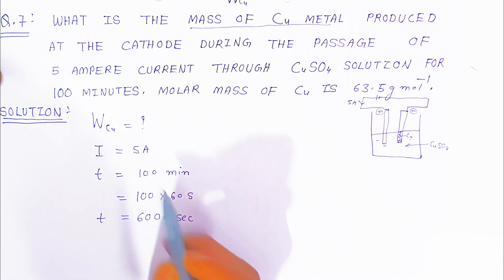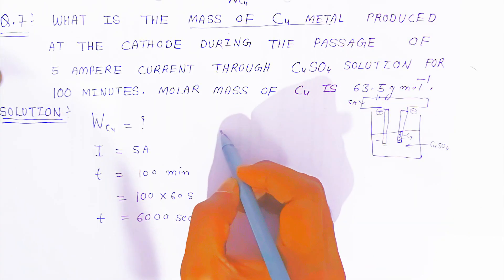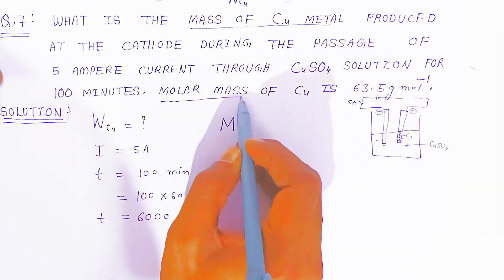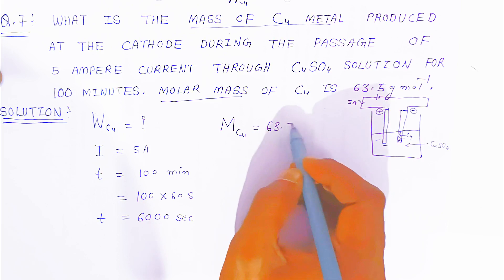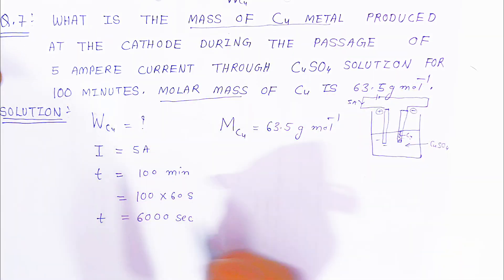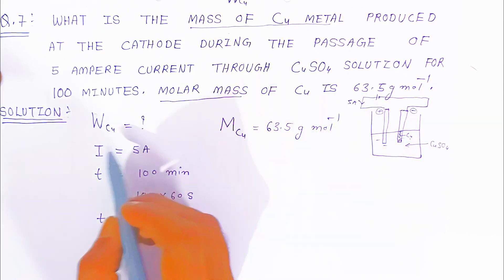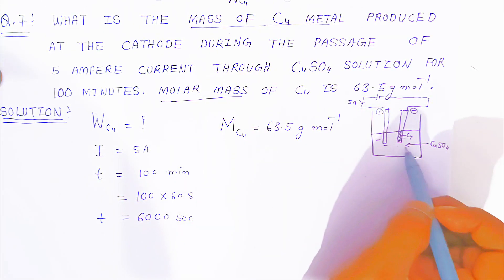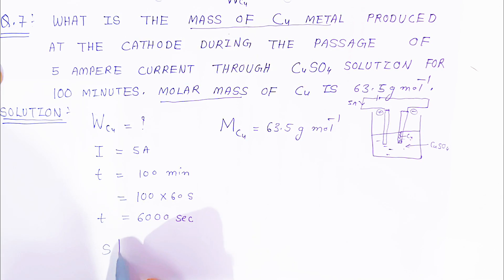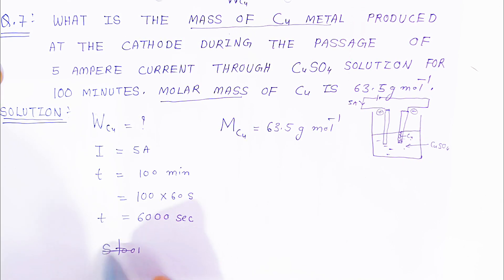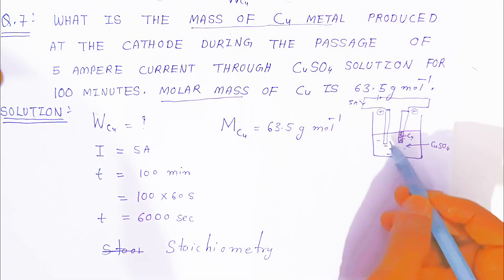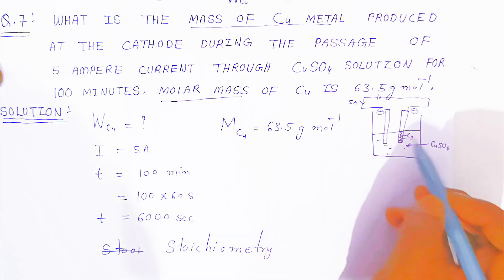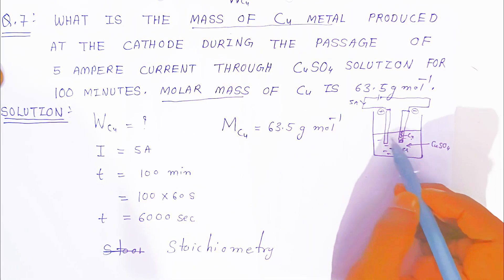So time, small t, is 6000 seconds. The molar mass, represented with capital M, of copper is given as 63.5 gram per mole. According to stoichiometry, the reaction taking place is: Cu²⁺ will accept two electrons.